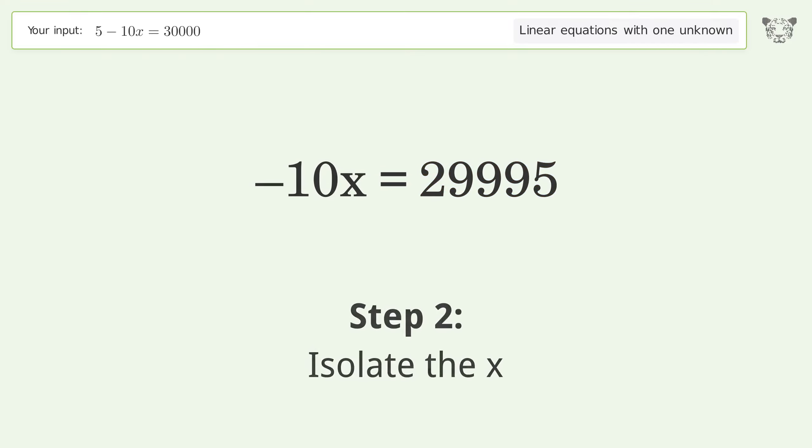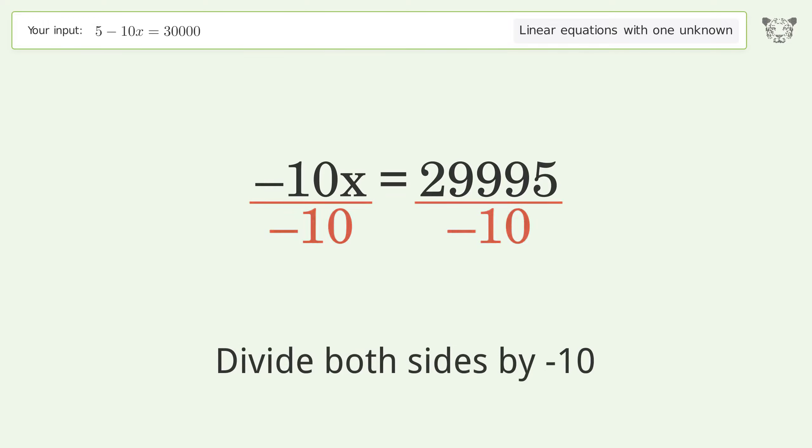Isolate the x. Divide both sides by negative 10. Cancel out the negatives.